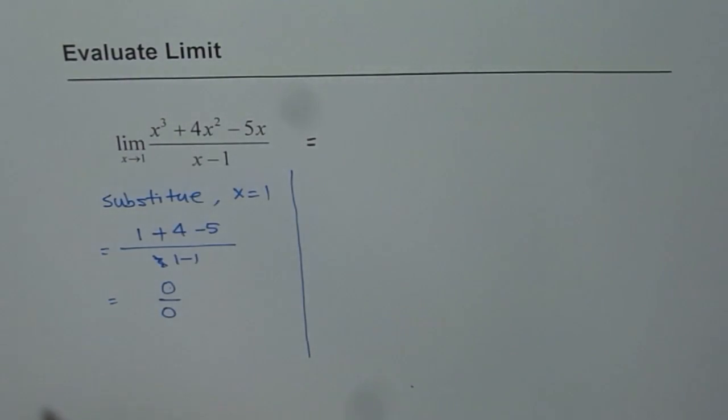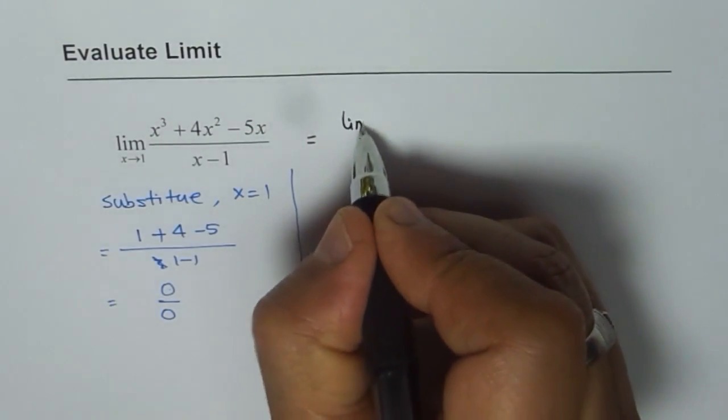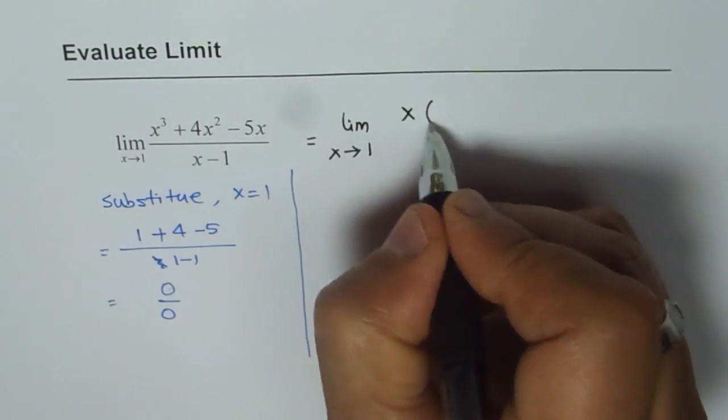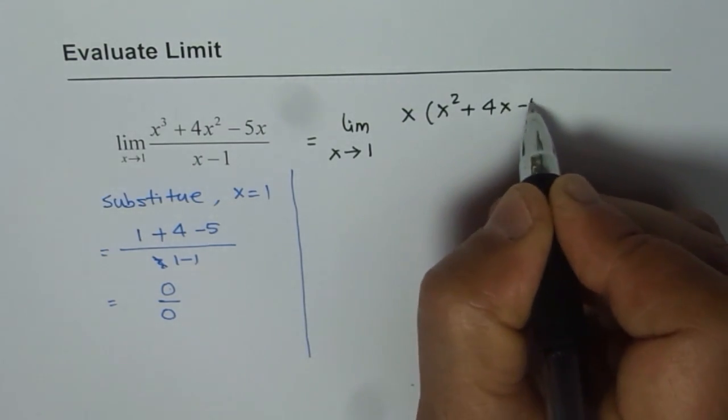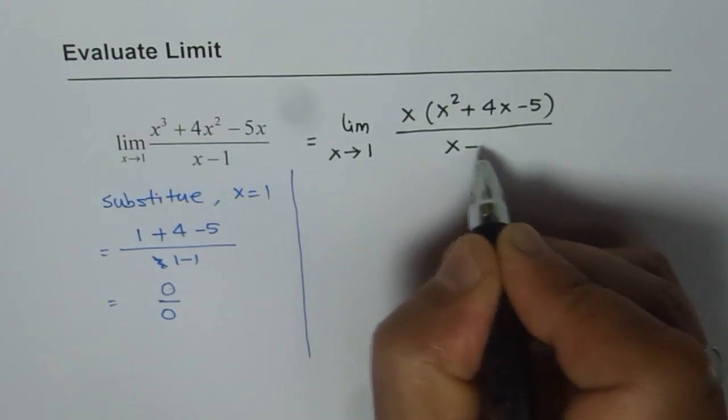x minus 1 is the common factor. So let's factorize the numerator. We have limit x approaches 1. We can take x common. Then we are left with x squared plus 4x minus 5. That's a quadratic factor divided by x minus 1.